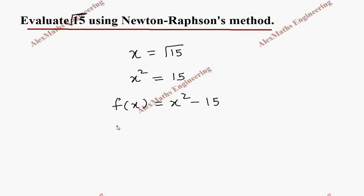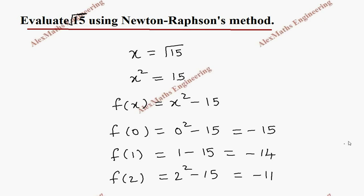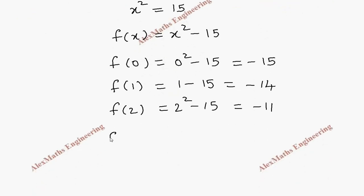Now let's take f of 0. It means 0 square minus 15, which is minus 15. Let's take 1. When I take 1, it is 1 square minus 15, which is minus 14. f of 2, 2 square, which is 4. So we get minus 11. We are looking for a sign change in f of x. So now we take 3. It is 3 square minus 15. 9 minus 15, which is minus 6.